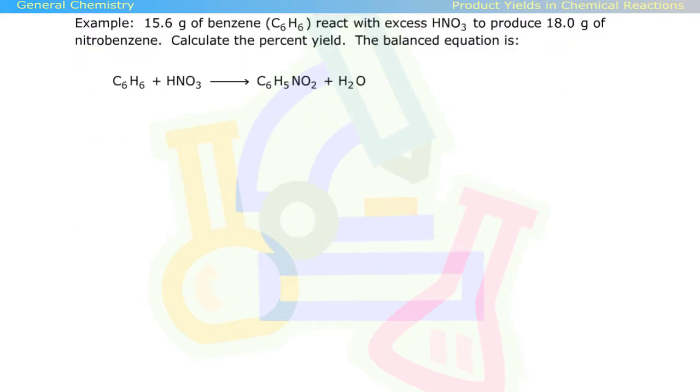Here's an example. 15.6 grams of benzene react with excess nitric acid to produce 18 grams of nitrobenzene. Calculate the percent yield.